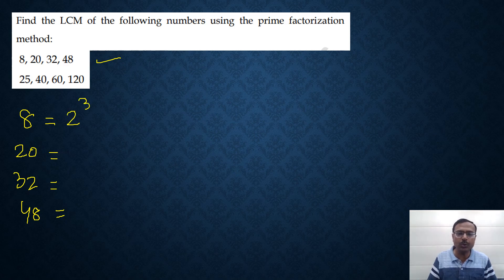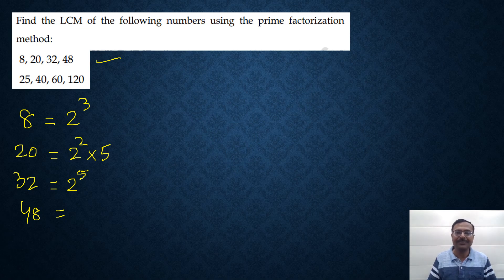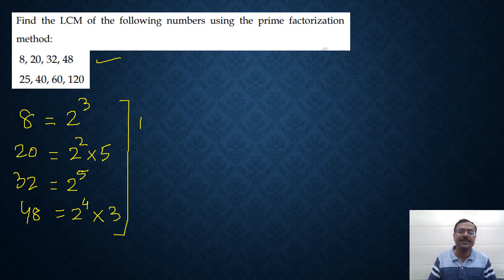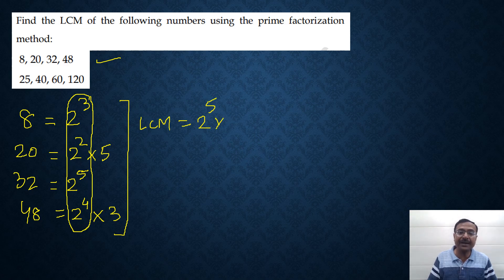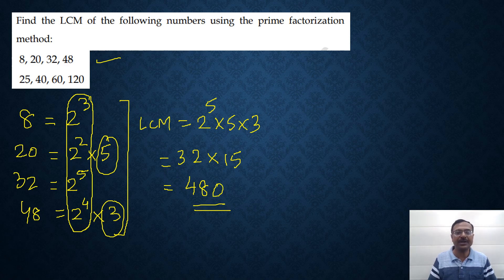We all know that 8 is 2 cube, 20 is 2 square times 5 that's 20, 32 is 2 raised to power 5, and 48 is 2 raised to power 4 times 3. Now, for finding the LCM of these 4 numbers we just take the highest power of the common factors. 2 is a common factor and the highest power is 2 raised to power 5, and all the uncommon factors like 5 and 3 will also form a part of the LCM. You see 2 raised to power 5 is 32 and 5 times 3 is 15 that gives you 480 as the LCM of 8, 20, 32 and 48.